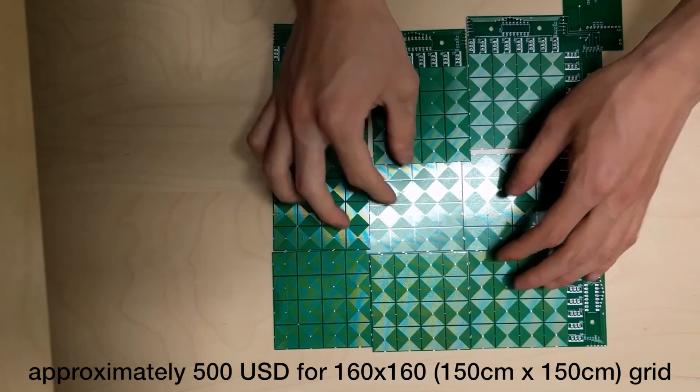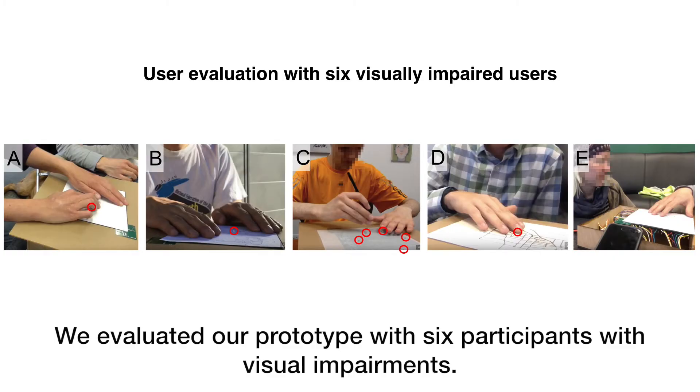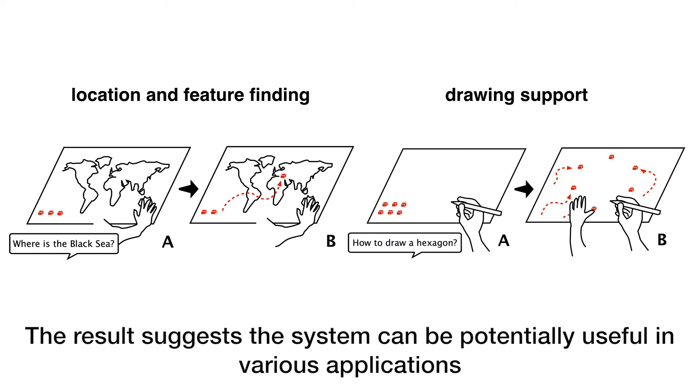We evaluated our prototype with six participants with visual impairments. The results suggest the system can be potentially useful in various applications such as location finding or drawing support. Thank you.